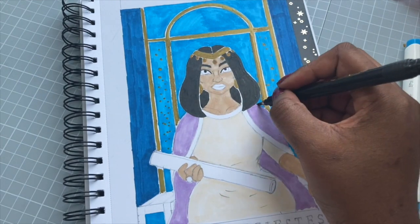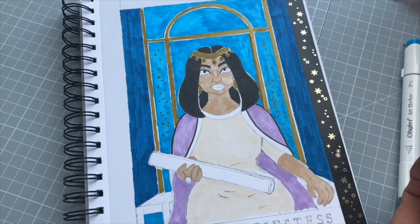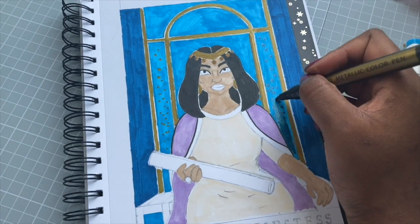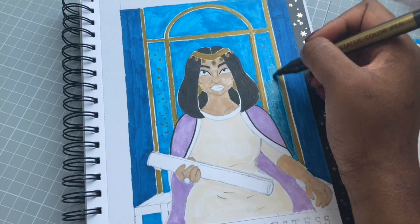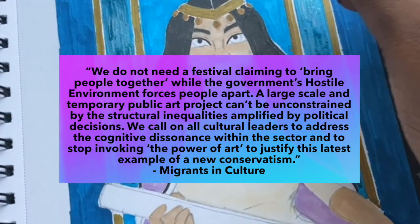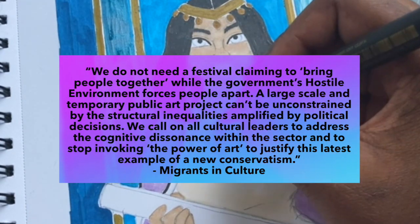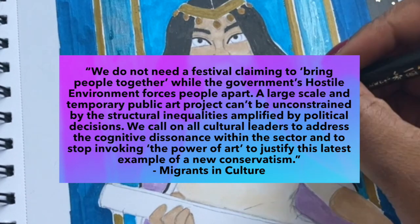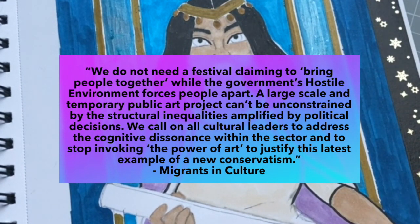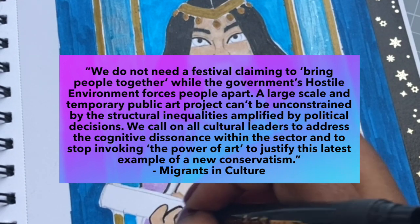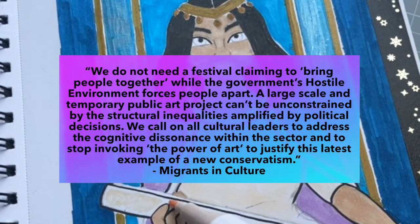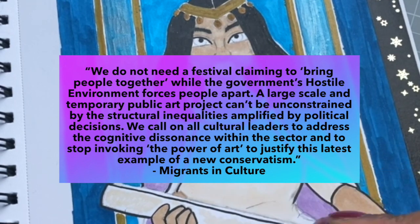Migrants of Culture is a network of migrants organising to create the conditions of safety, agency and solidarity in the culture sector for migrants, people of colour and all who are impacted by the UK's immigration regime. On their website, they stated in response to the festival: 'We do not need a festival claiming to bring people together while the government's hostile environment forces people apart. A large-scale festival and a temporary public art project can't be unconstrained by the structural inequalities amplified by political decisions. We call on cultural leaders to address the cognitive dissonance within the sector and to stop invoking the power of art to justify the latest example of new conservatism.'